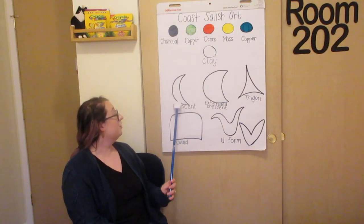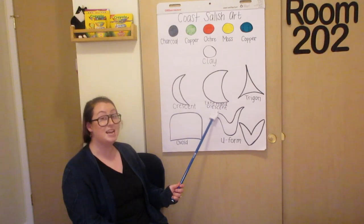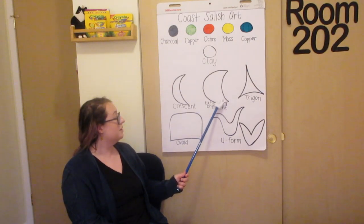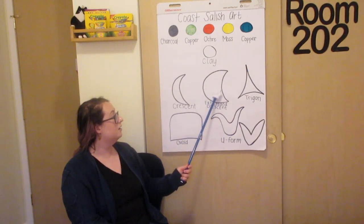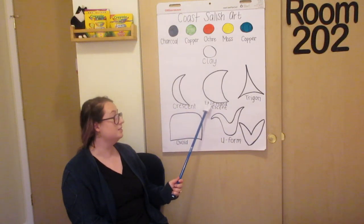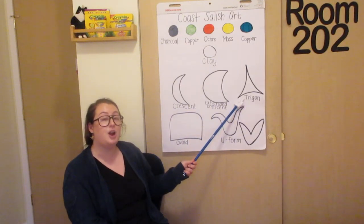The shapes are crescent, extended crescent, so a little bit wider. An extended crescent. A trigon. This looks like a triangle, but its sides are rounded.